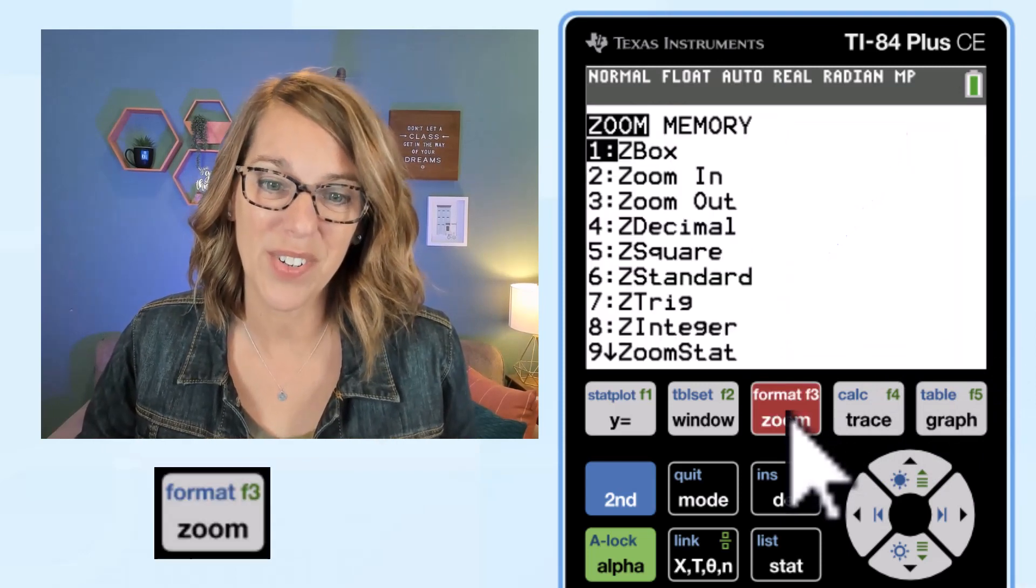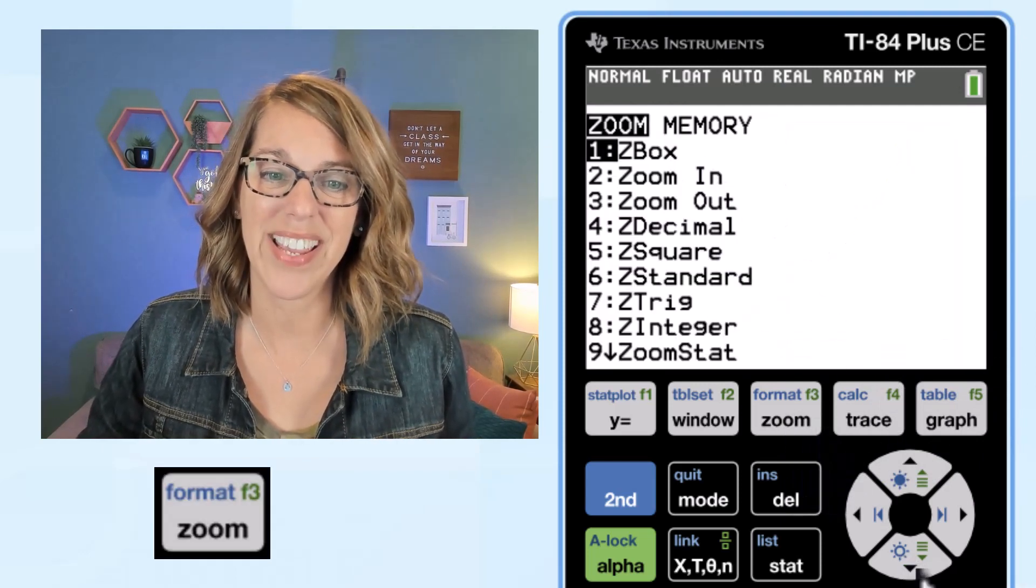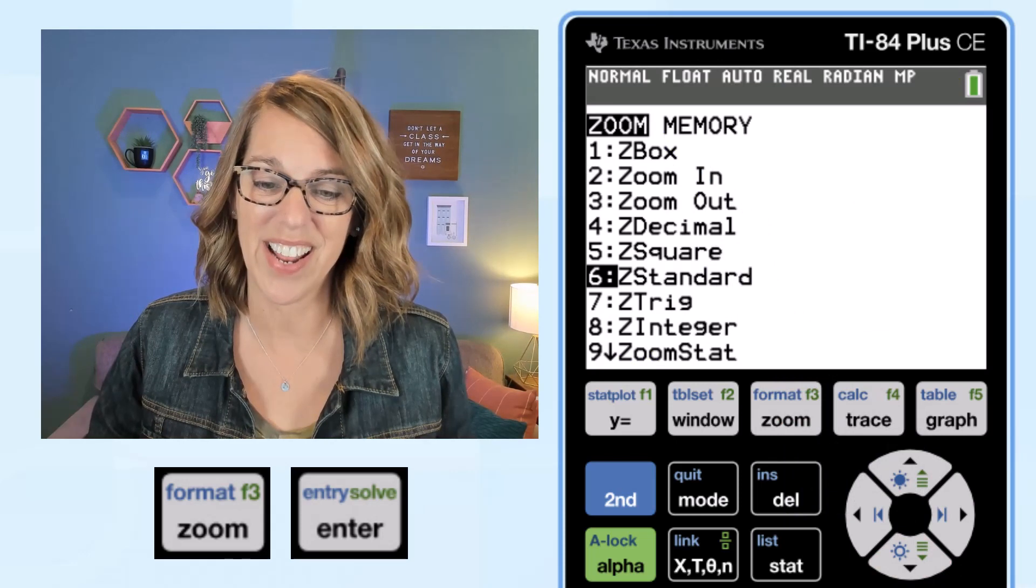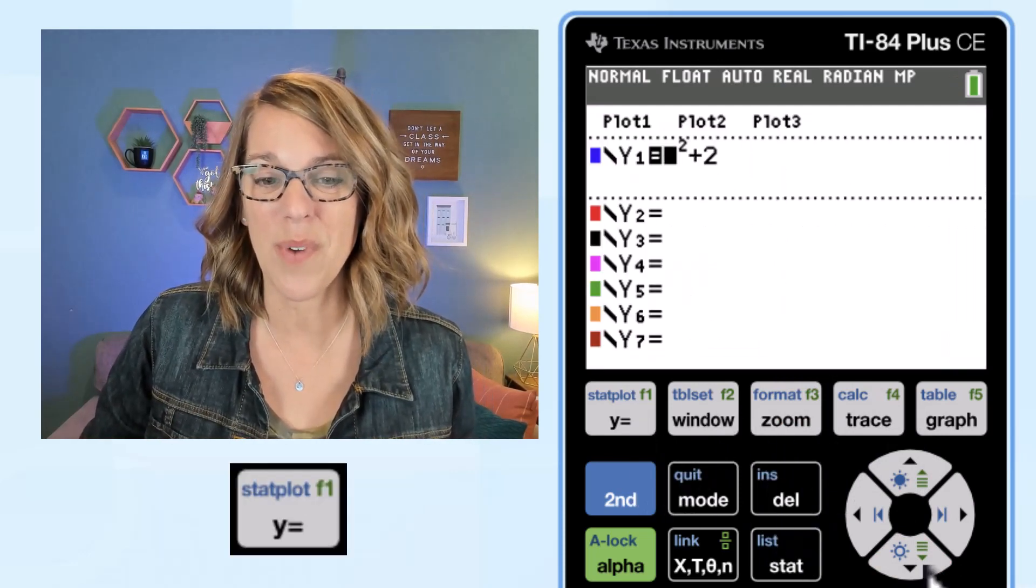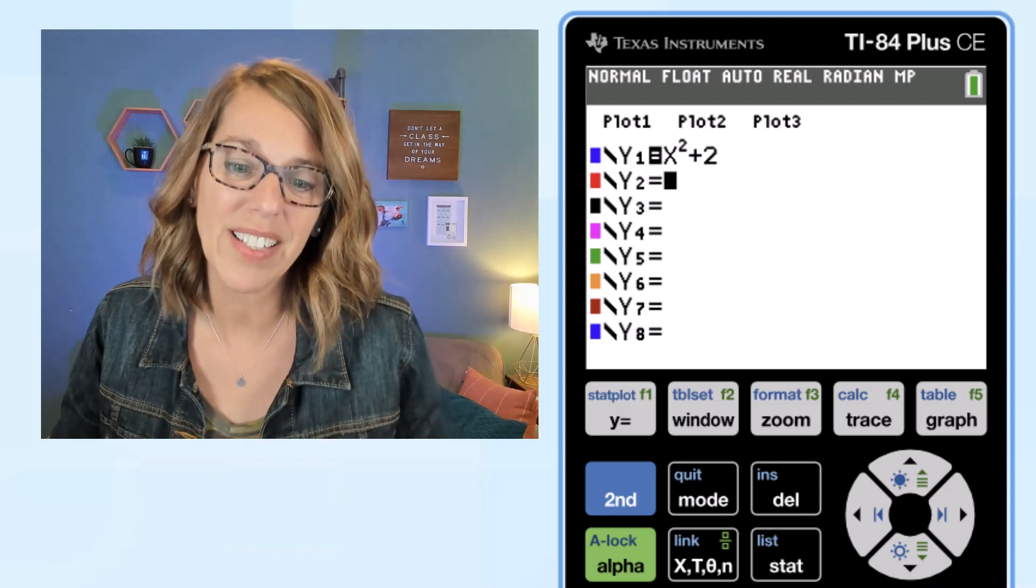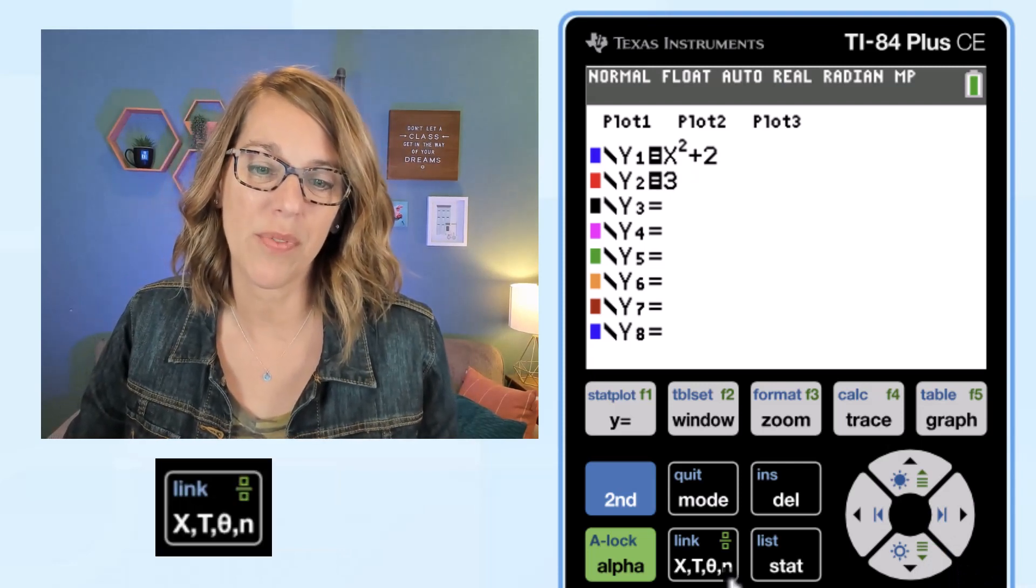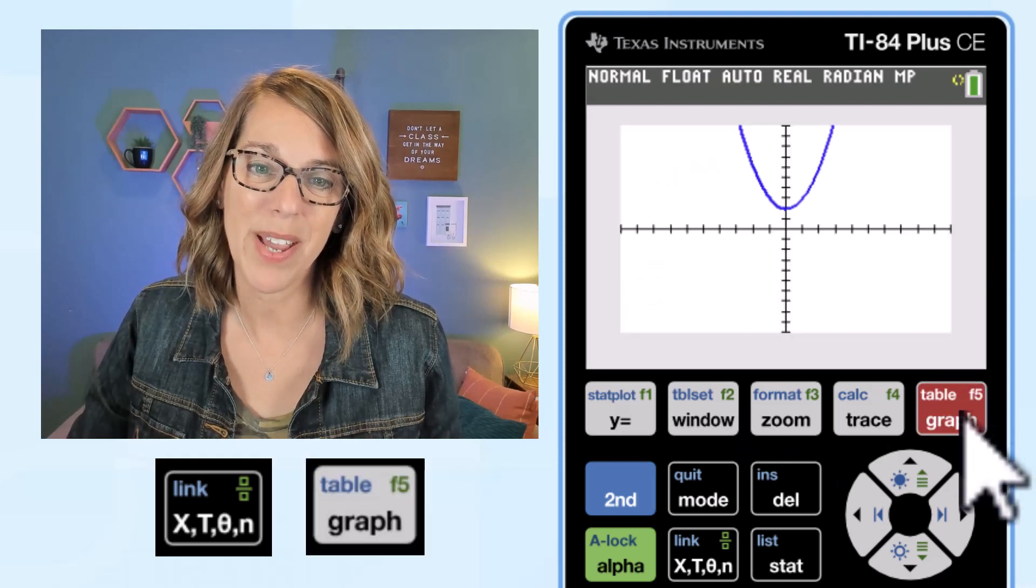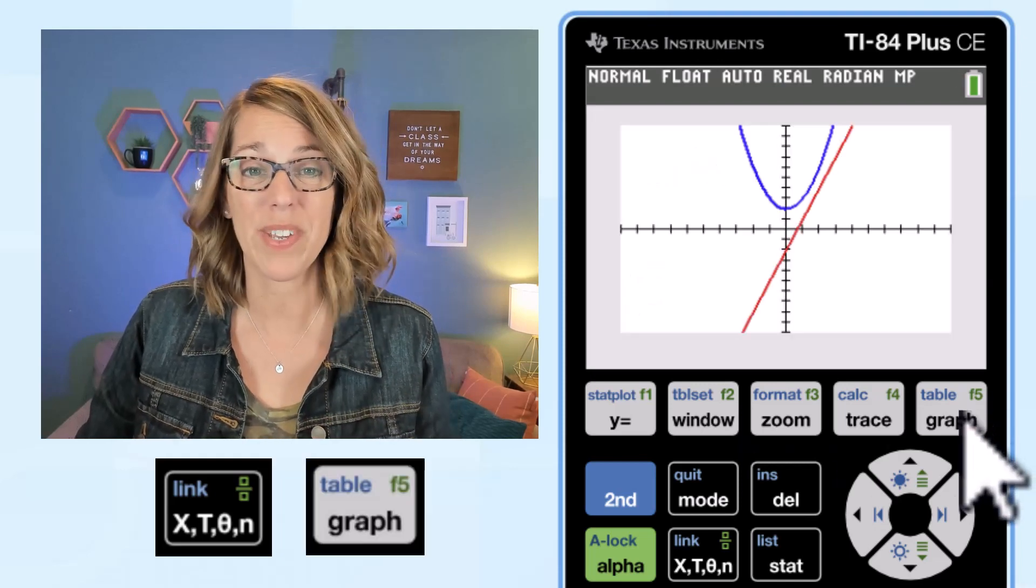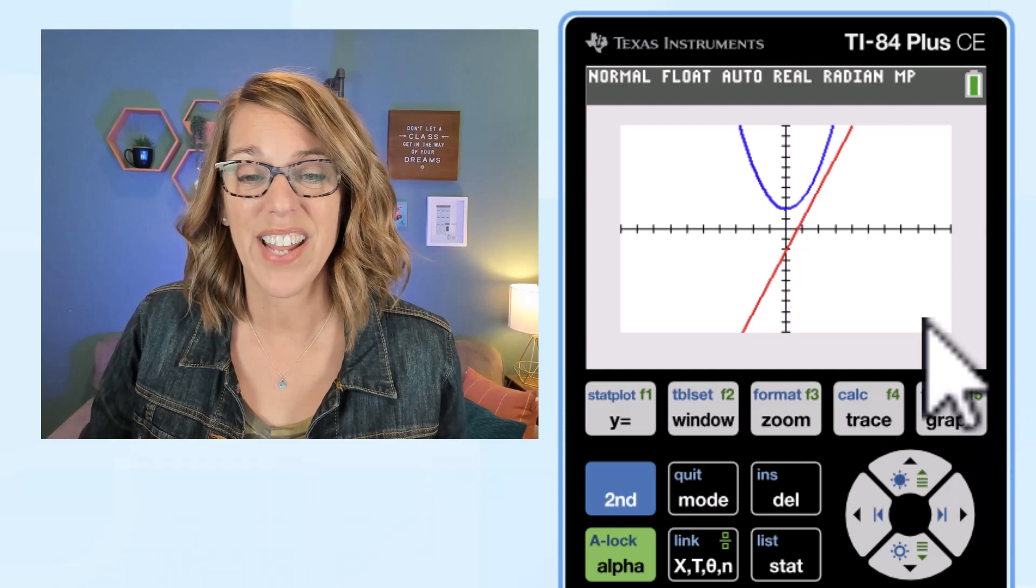Now to get back to my original viewing screen I'm just gonna go again to zoom standard. Let's put in a second graph by going to Y equals. Let's put in a line this time I want to do 3X minus 2 and I can hit my graph button. You could also right from here click zoom standard.